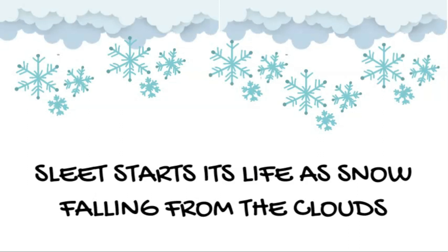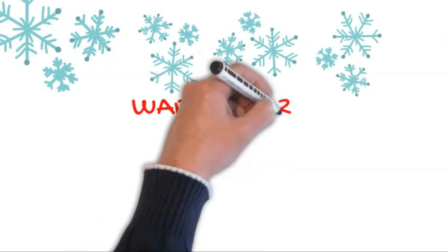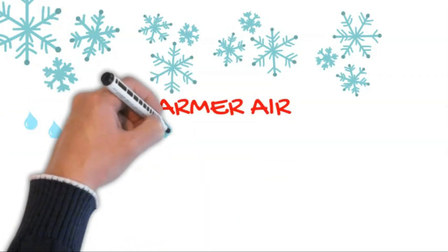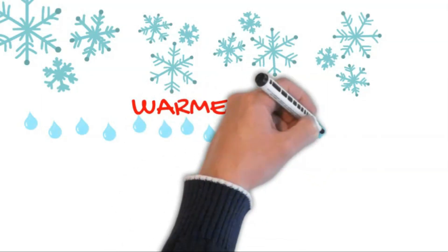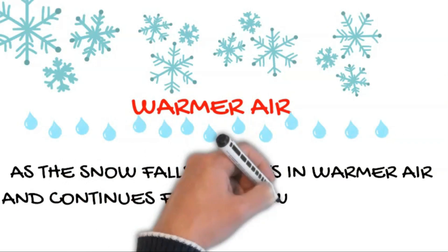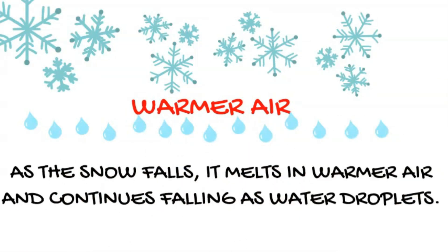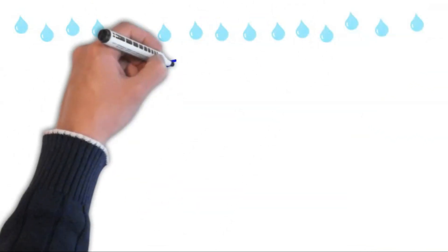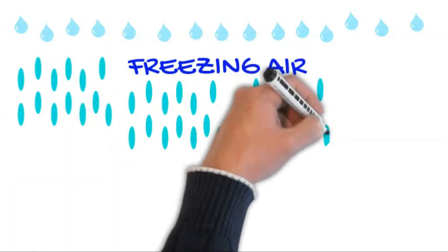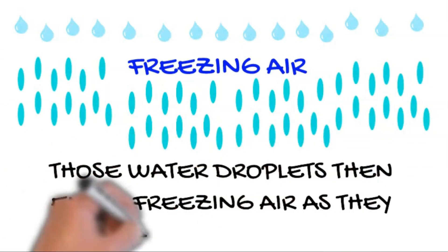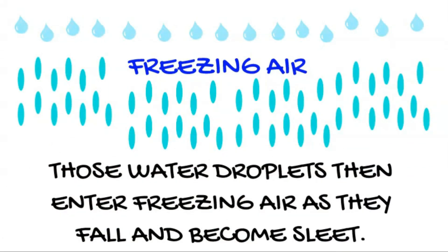Sleet starts its life as snow falling from the clouds. As the snow falls, it melts in warmer air and continues falling as water droplets. Those water droplets then enter freezing air as they fall and become sleet.